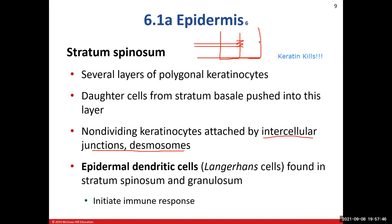We also see another cell type in the stratum spinosum — epidermal dendritic cells, also known as Langerhans cells. These cells are part of our immune response and play a role in helping to monitor for skin cancer. If there's any abnormal cell growth, they initiate the immune response. They also act as antigen-presenting cells: they find an abnormal protein and show it to an immune cell — essentially asking whether it belongs there. If the immune cell says no, it initiates the immune response.